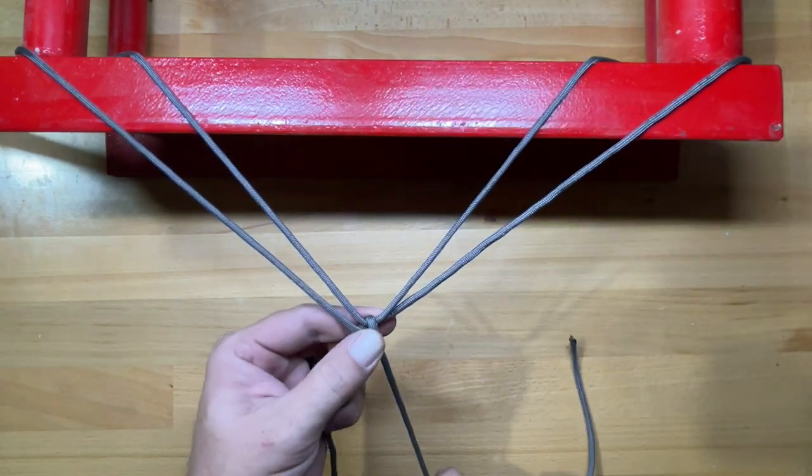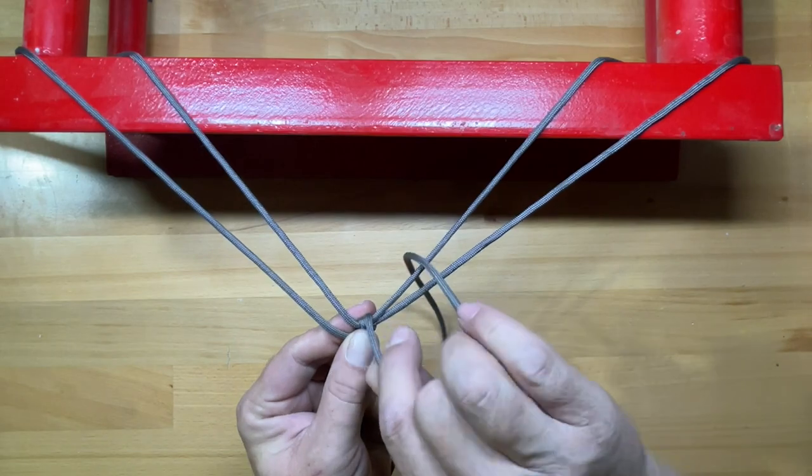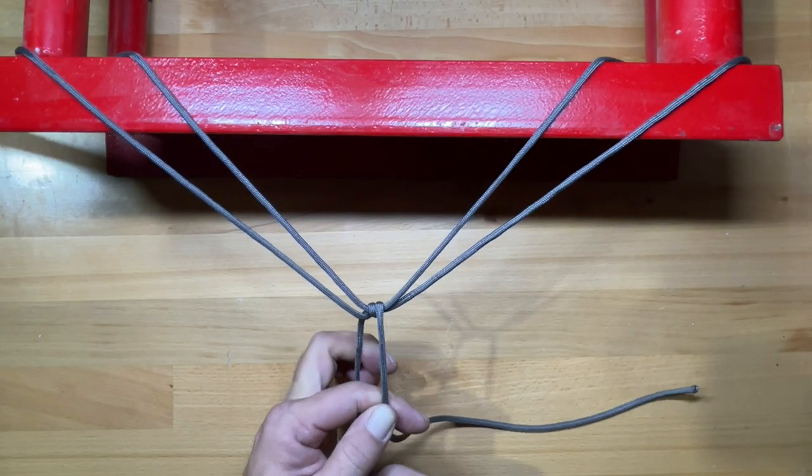Now what I want to do is take the rope and go around this two times. We want to do two wraps here. And then down here we're going to put a constrictor loop.